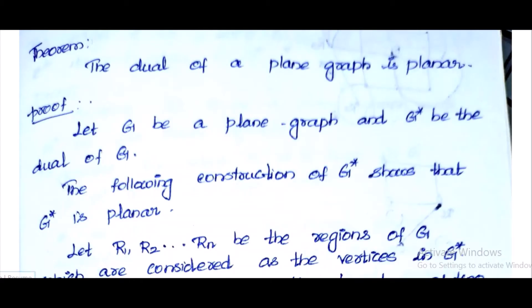Hello students, welcome to the class of Graph Theory. The fourth module's last topic is Geometric Dual, otherwise known as the Dual of a Graph. This covers Self-Dual and Dual Graph related theorems. The first theorem states: the dual of a plane graph is also planar.